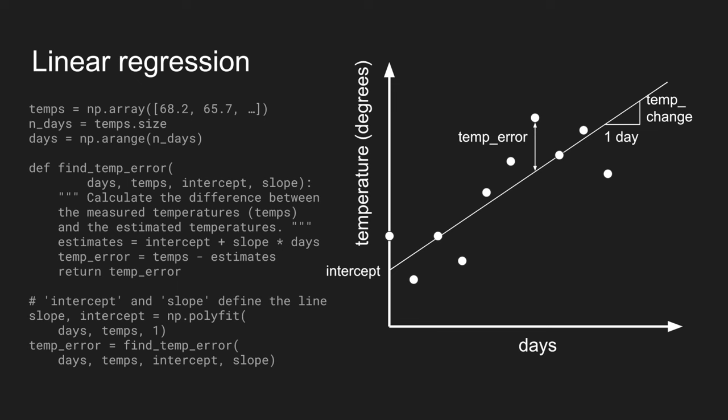And now, by passing that slope and intercept into the find temp error function, we can actually find what our errors are.